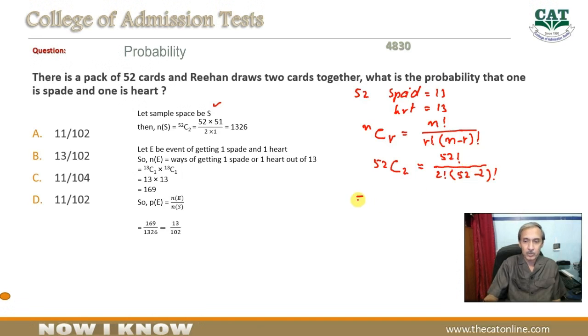Ab jab hum 52 ka factorial lein ge to woh hoga 52 into 51 into 50 factorial. Kyunke aage 51, phir uske baad 49, phir uske baad 48 and so on, to yeh 50 factorial ke equal hoga.